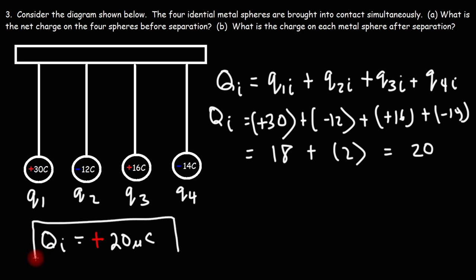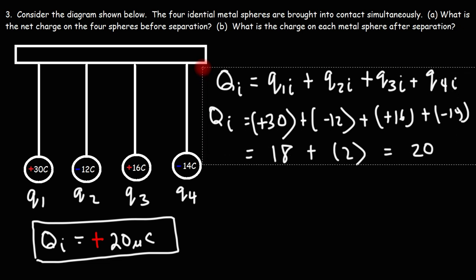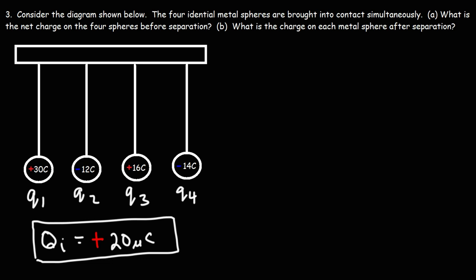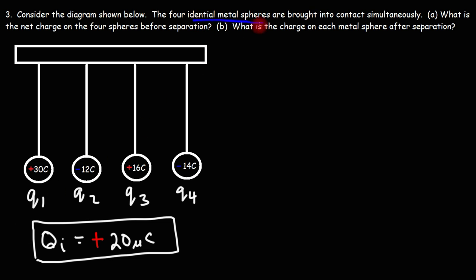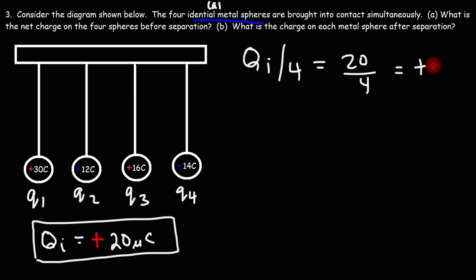This total will be the same after separation according to the law of conservation of electric charge. Before contact, after contact, or after separation, the total electric charge in the closed system remains constant at +20 microcoulombs. Because we're dealing with identical metal spheres, they will have the same charge after separation. So we take the total charge and divide by four: 20 divided by 4 equals 5. Each charge will have a value of positive 5 microcoulombs.